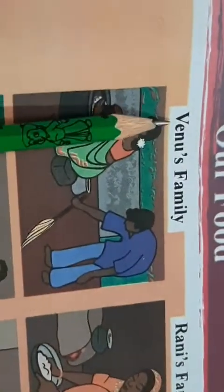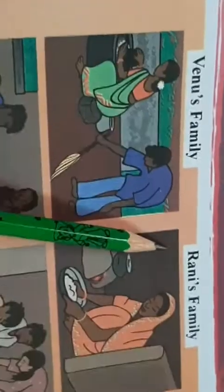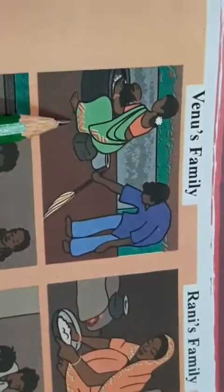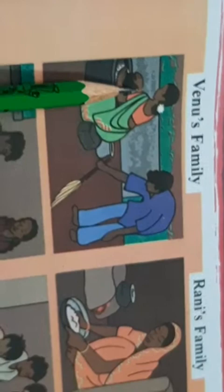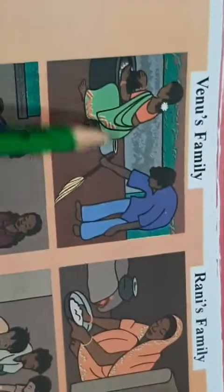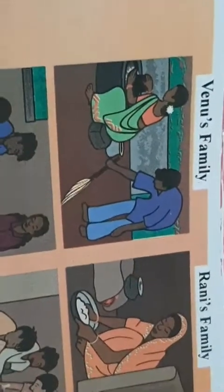Here you can see Venu's family and Rani's family. In Venu's family, the mother is cooking the food and the father is cleaning the house. Fir sab log saath mein baithke, they all are having food together.